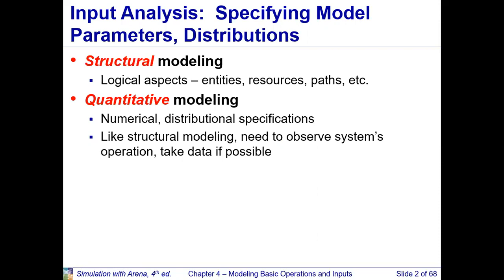Structural modeling is where we talk about logical aspects — how entities are moving into the system, what our resources are, what path entities are following, and so on. When we talk about quantitative modeling, we are talking about the numerical input we are giving and from what kind of distribution our data are being generated. For example, we usually use time between arrivals as exponentially distributed with a certain mean. So how can we say that it's exponentially distributed? We have to collect data and then fit the right distribution so that the validation of our model is intact and our model is a true representation of the system we are modeling.